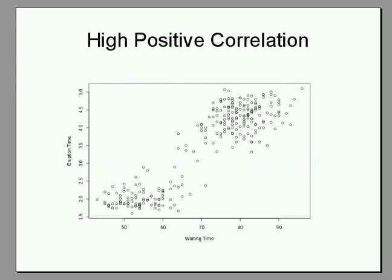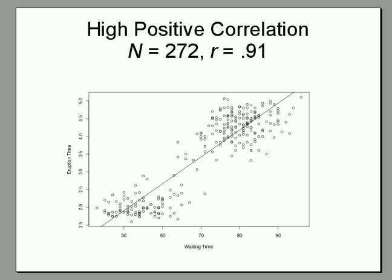Let's look at an example of a high positive correlation. On the x-axis is the waiting time between eruptions of the Old Faithful geyser — a geyser in one of America's national parks. On the y-axis is the duration of each eruption. As you can see, the longer the waiting time, the longer the subsequent eruption is going to be. If we draw the line that best fits this data, we'll see a very high correlation of 0.91, where the absolute maximum is 1.0.